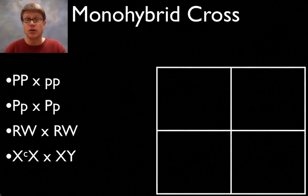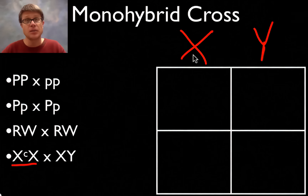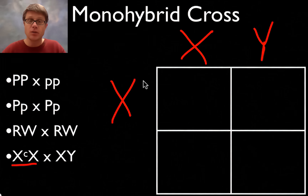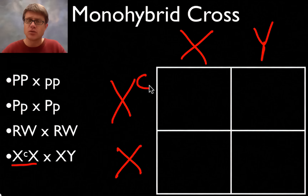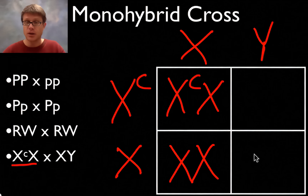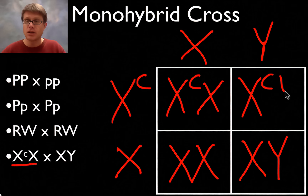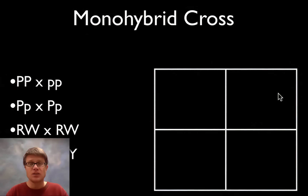Now let's try a sex-linked or X-linked chromosome example. We have a mom who is XX and a carrier of the colorblind gene, and a dad who is normal XY. Dad goes across the top: half the time he gives X, half the time he gives Y. Mom goes down the side as a carrier. Filling in the boxes: one female who is a carrier, one normal female, one normal male XY, and one male who is colorblind — because he doesn't have another X chromosome as a backup copy. Those are our monohybrid crosses.